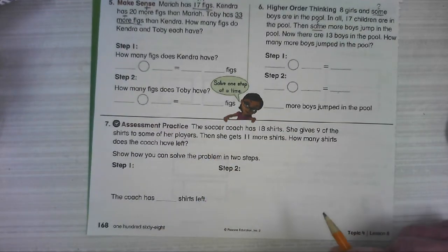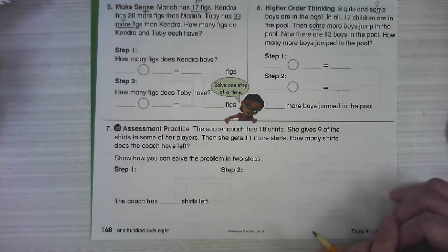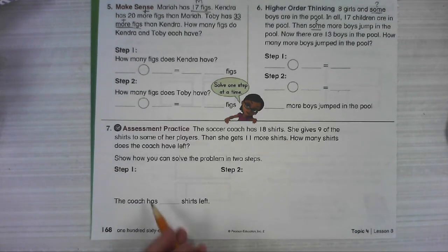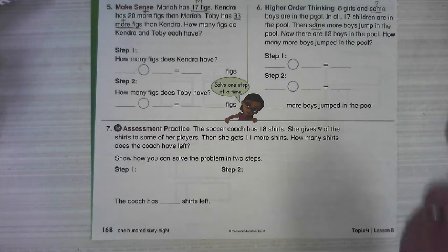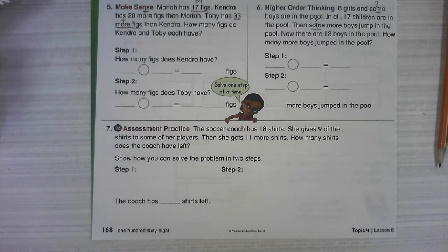Number seven. The soccer coach has 18 shirts. She gives nine of the shirts to some of her players. Then, she gets 11 more shirts. How many shirts does the coach have left? So show how you can solve it in two steps, just like you did here. And then tell what your answer is. All right, guys. I'm going to make a video to walk through the answers to these. So work through this. And then, if you want some help, go ahead and watch that video also. Best of luck. And I can't wait to help you if you need any help or see what your successes were. See you later. Bye.